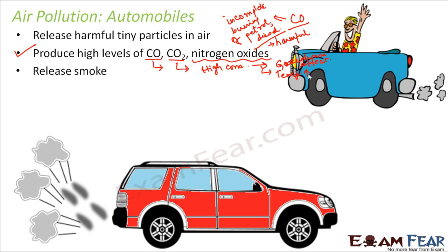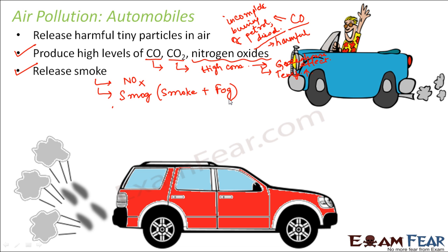Vehicles also release a lot of smoke, which we can actually visualize from vehicles running on the road. This smoke contains nitrogen oxides, which combine with other particles in the air to form nitric acid. They also combine with fog to form smog — smog being smoke plus fog. On a winter morning you can see how fog looks; combined with smoke it gives a blackish appearance everywhere. Smog can cause breathing problems, asthma, cough, and other issues. Air pollution mostly affects us by causing respiratory problems because we breathe air.